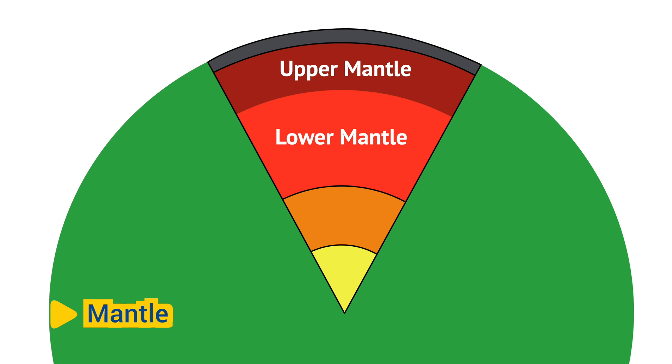The upper mantle is rigid and solid, while the lower mantle is hotter and under higher pressure, causing it to flow more slowly.